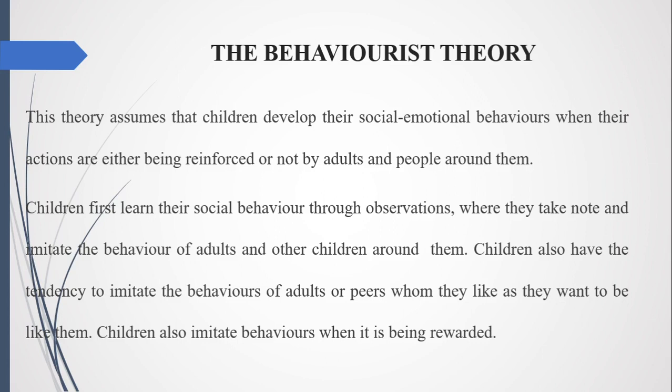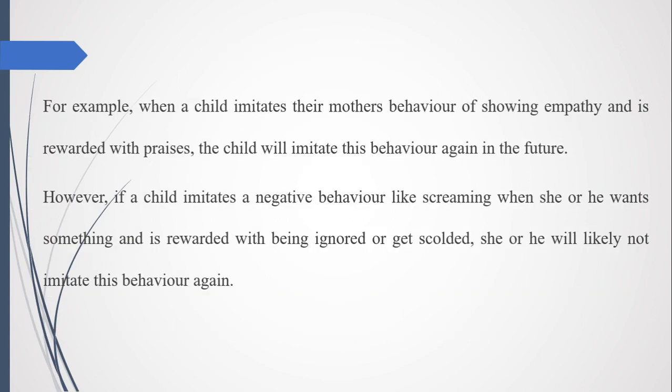The behavioristic theory assumes that children develop their social and emotional behavior when their actions are either reinforced or not by adults and people around them. Children first learn social behavior through observation, imitating the behavior of adults and other children around them. Children also tend to imitate the behavior of adults or peers whom they like, and imitate behavior when it is being rewarded. For example, when a child imitates their mother's behavior of showing empathy and is rewarded with praise, the child will imitate this behavior again. However, if a child imitates a negative behavior like screaming to get something and is ignored or scolded, she or he will likely not imitate this behavior again.